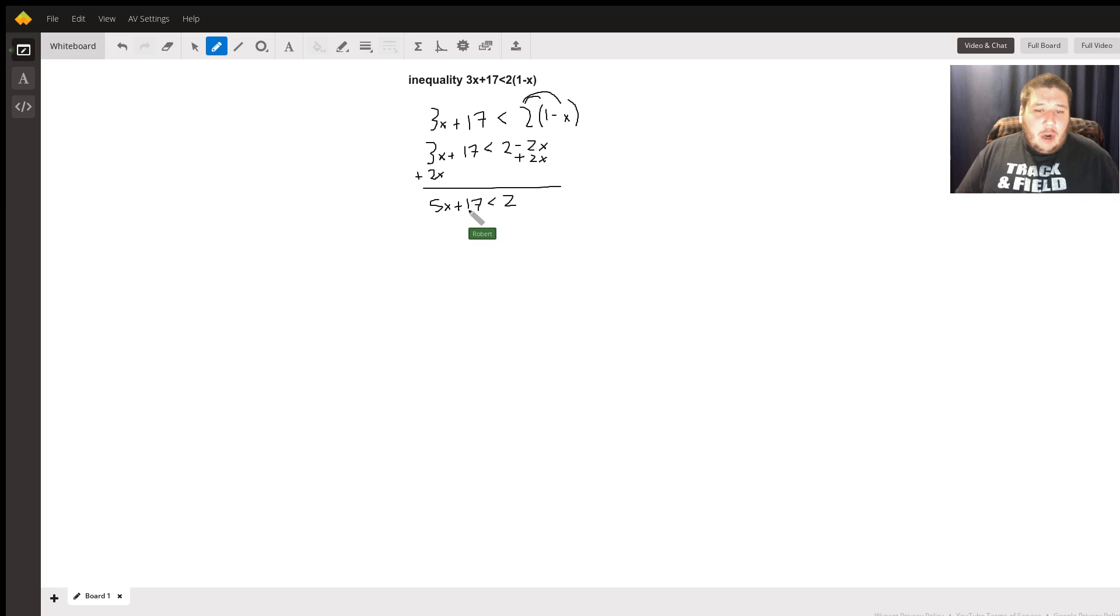From there, I want to get all my constants together now that I have my x's on one side. This 17 is going to go over there, so I have to subtract 17. Remember what I do to one side, I have to do to the other. I'm going to be left with 5x. Positive 17 minus 17 is going to give me 0, and 2 minus 17 is going to give me negative 15.